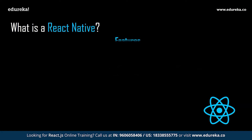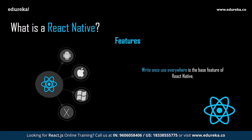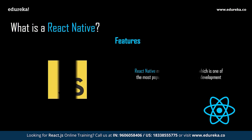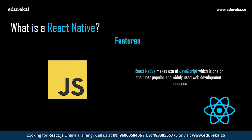The features of React Native — Write once and use everywhere. This is React Native's base feature. It means that code written in React Native can be used on any of the mobile platforms to build native applications that work on multiple platforms. React Native makes use of JavaScript, which is one of the most popular and widely used web development languages. For every web developer, JavaScript is a must-have skill, and it is very easy to learn and implement.